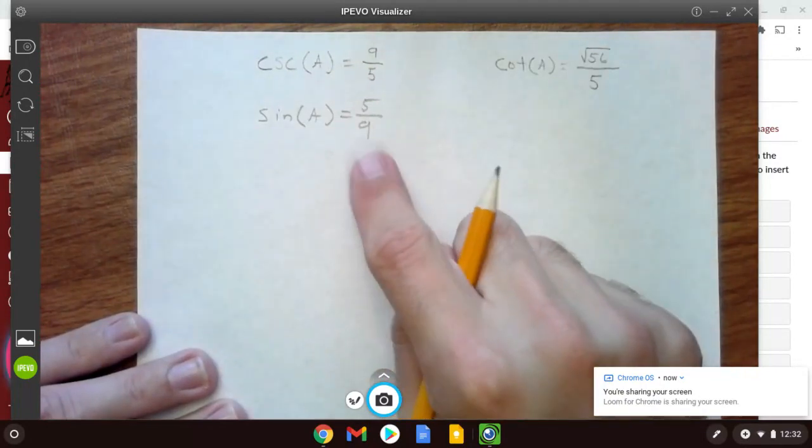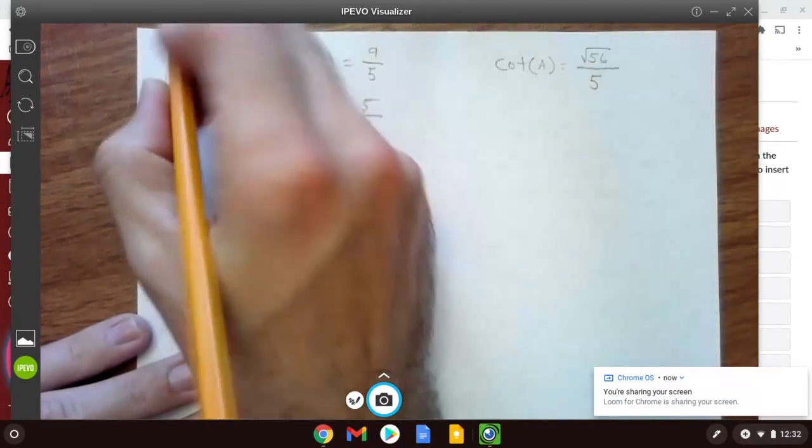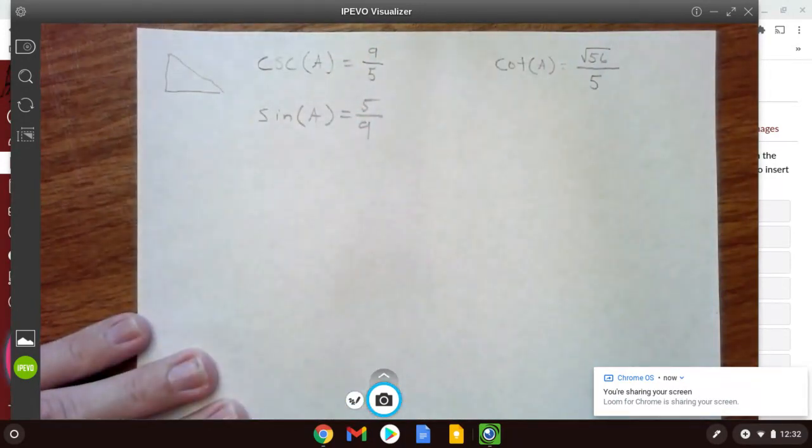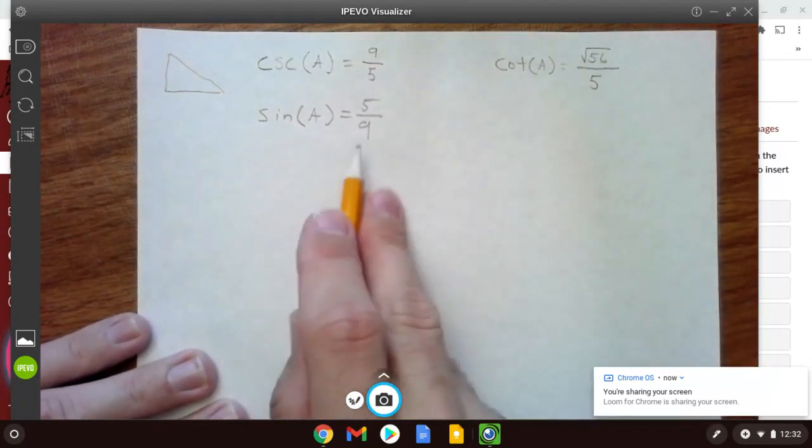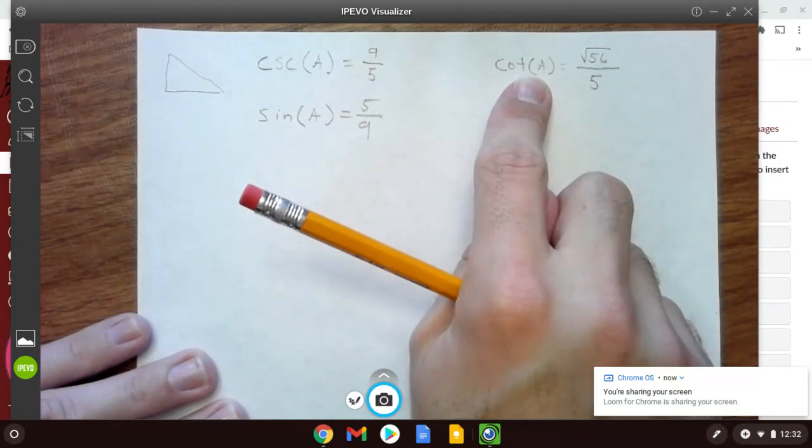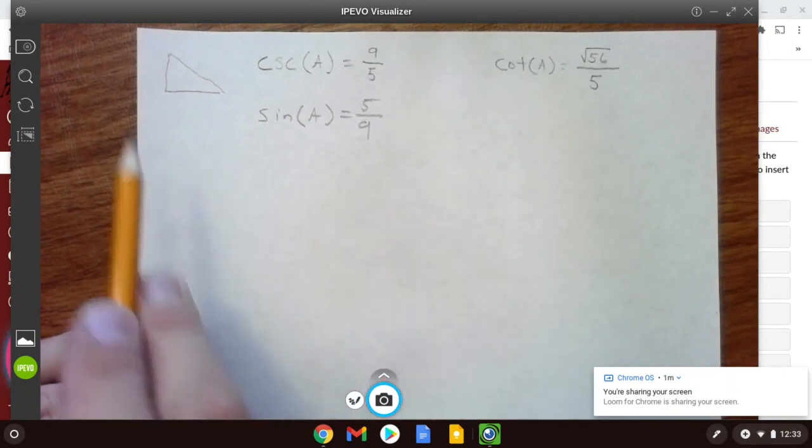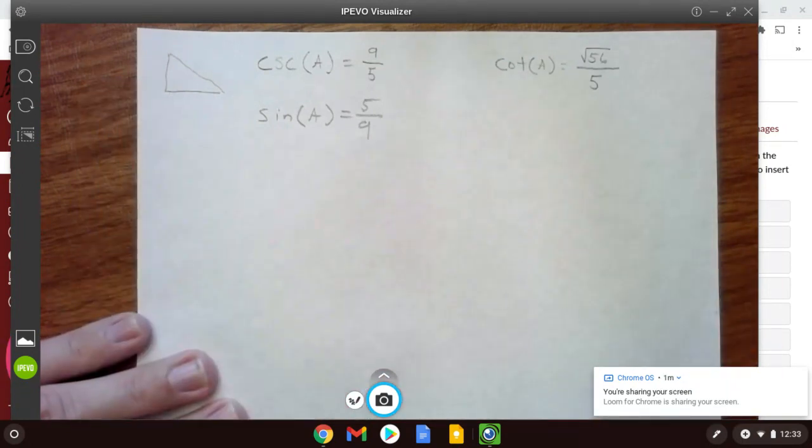Now, with this, we could go ahead and draw a little right triangle and call one of these sides angle a and kind of work it like we did the last one. The way I'm going to do it this time, because they give us two of the functions, a specific two, we're going to be able to use that and no triangle to find the others.